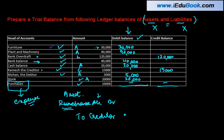Now for the totals: 30 plus 40 is 70, plus 41 is 110 — wait, that gives us 135 on one side. 120 plus 15 gives you 135 on the other side.